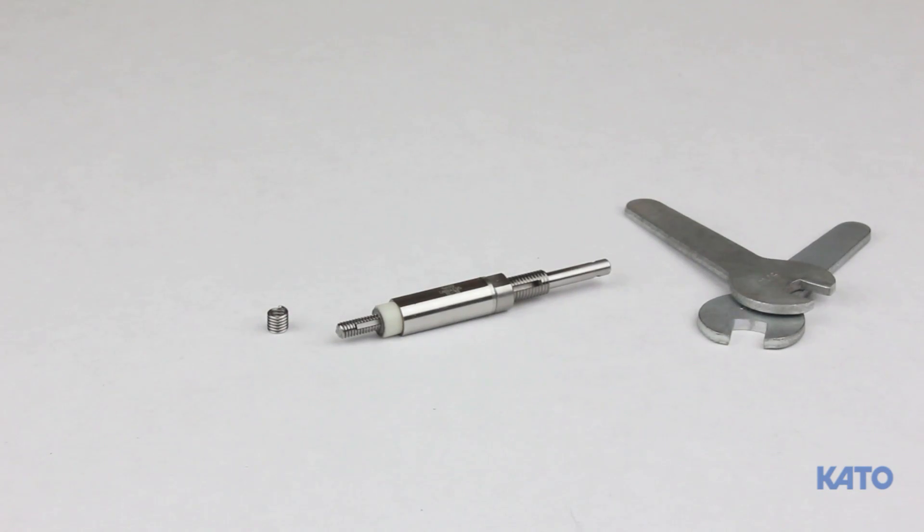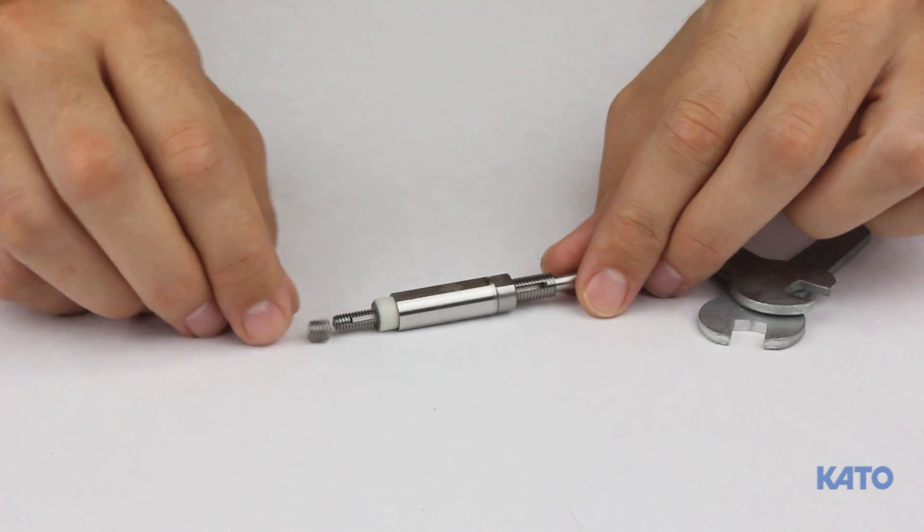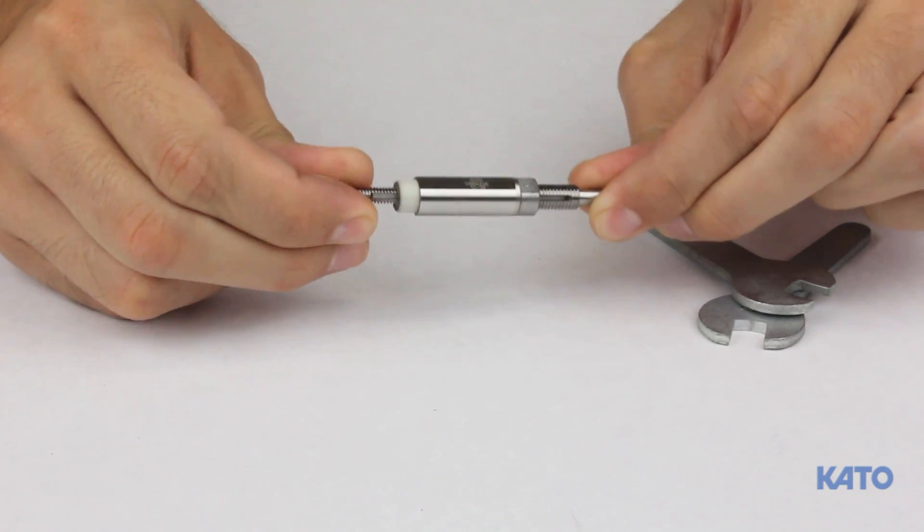Now we'll demonstrate how to set the correct installation depth using the tangless installation mandrel. The procedure is the same for tanged. Thread the insert all the way onto the mandrel until it stops.